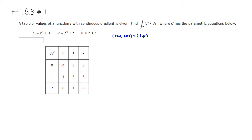The ending point is going to be x(1), y(1). So if you plug in 1 for t, you get t plus 1, so it's 2, and 1 plus 1, so 2. The ending point is (2, 2).